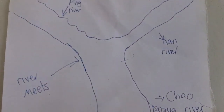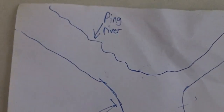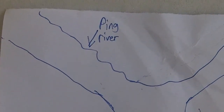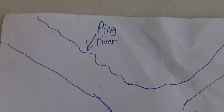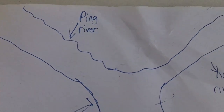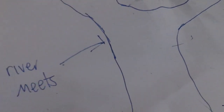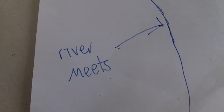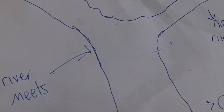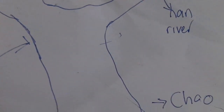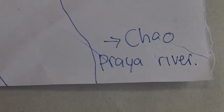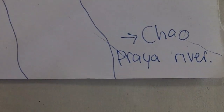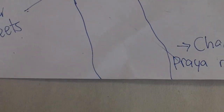Here is where the two rivers meet. For our example, we had the Ping and the Nan River. Here the Ping and the Nan River are meeting up with the Chao Phraya River, and it's also where the Chao Phraya River starts.